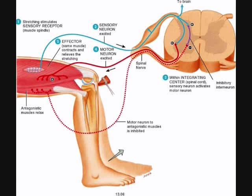Reflexes are fast, predictable, automatic responses to changes in our environment. In these particular examples of spinal reflexes, we're going to be adjusting to changes in the environment with regard to the degree of tension in our muscles.